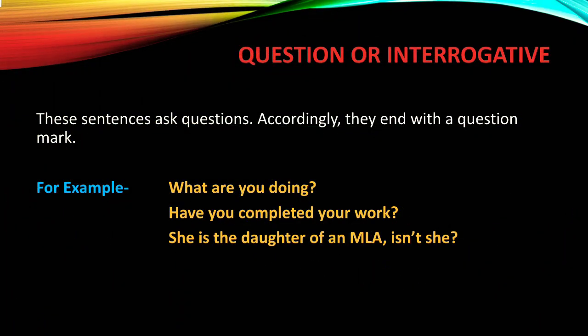Next, question or interrogative. These sentences ask questions and accordingly end with a question mark. For example: 'What are you doing?' 'Have you completed your work?' 'She is the daughter of an MLA, isn't she?' So here you can see there are three types of interrogative sentences. In the first sentence, the sentence starts with 'what' and seeks some information from you.